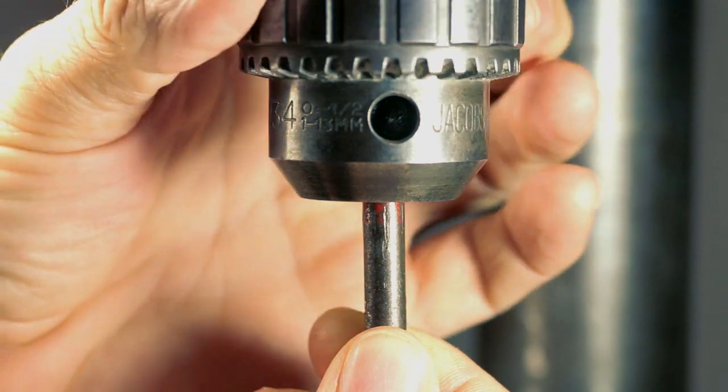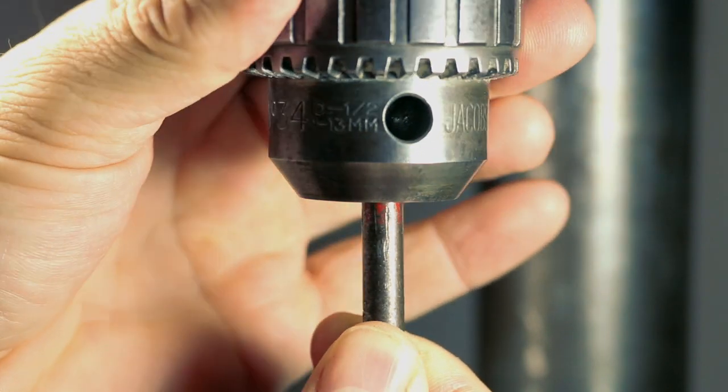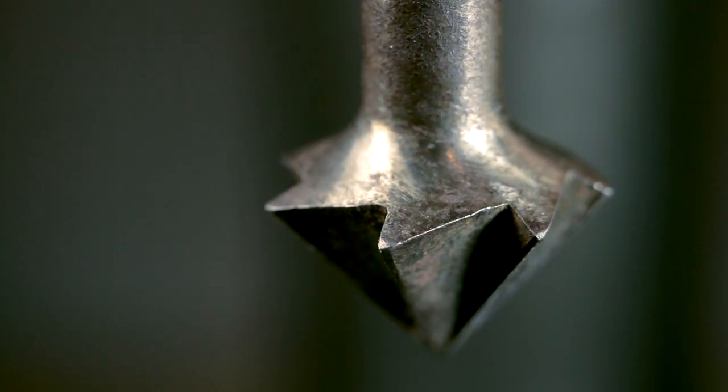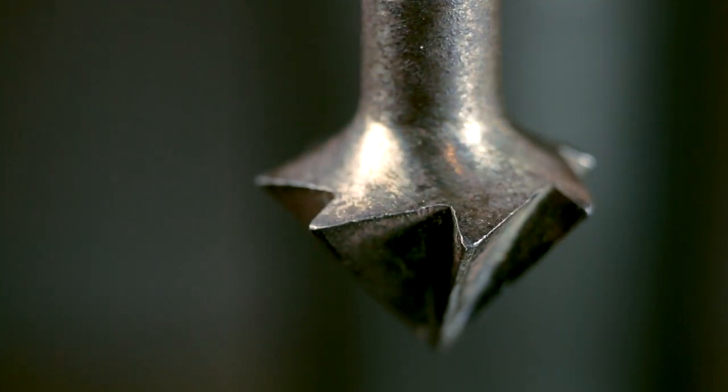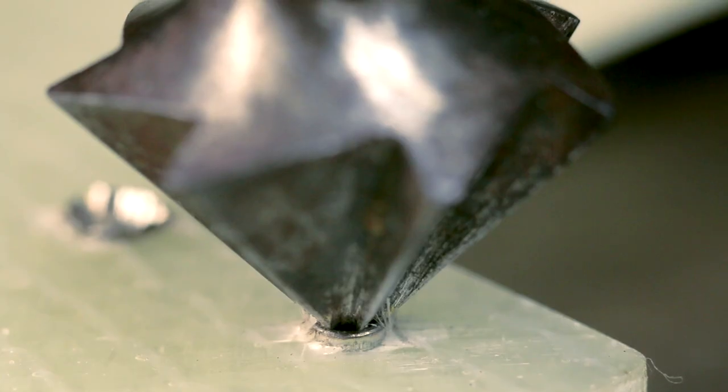On a side note, if you're after a decent swage tool, you can do no better than the old brace countersink bit. It swages the bottom of the turret in the most magical way.